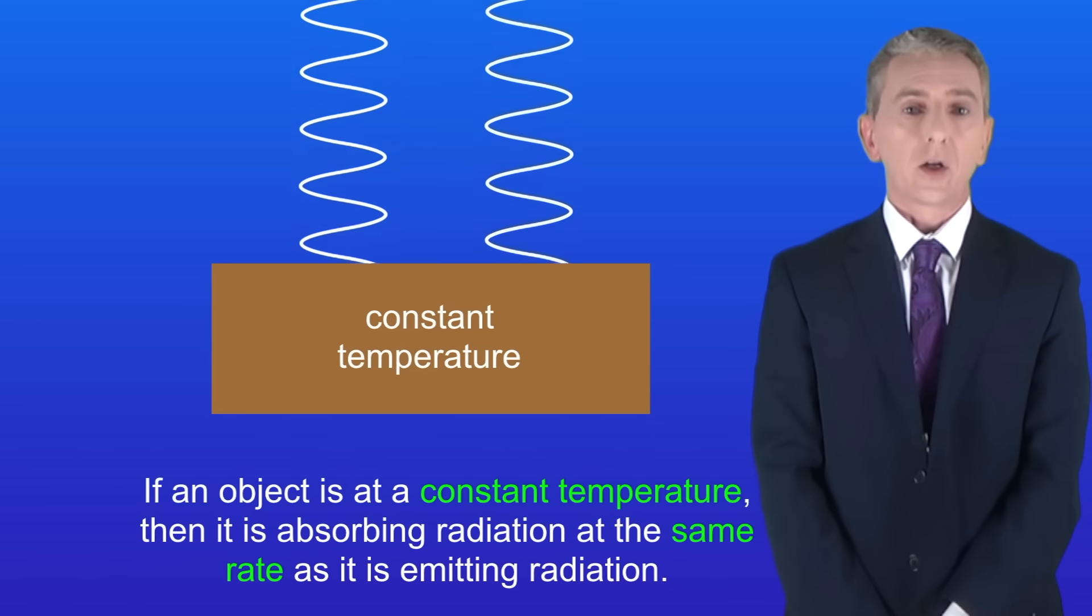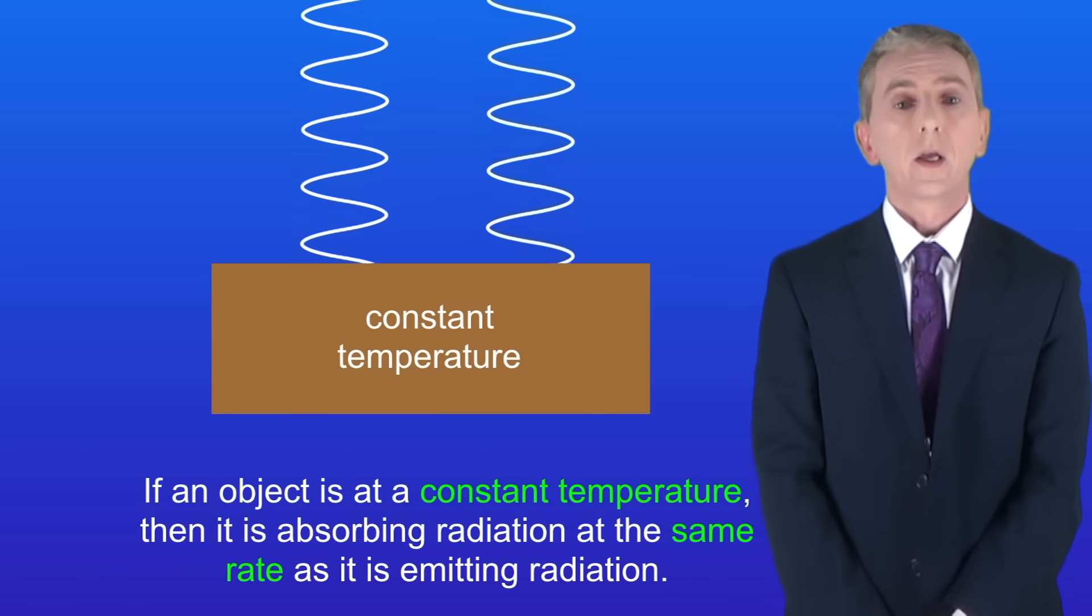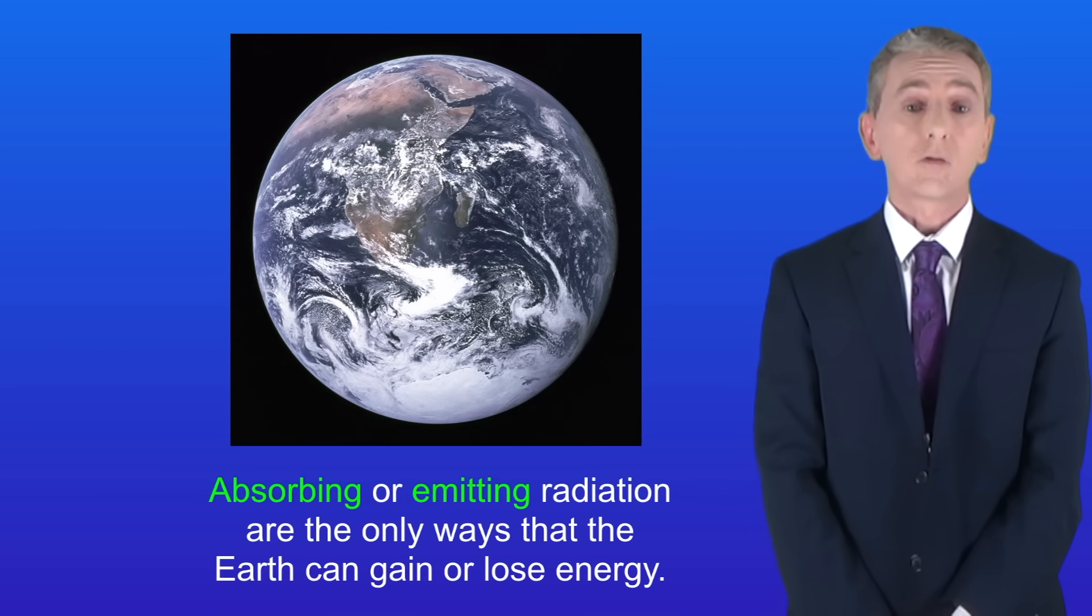Okay, we're going to finish now by looking at how radiation affects the temperature of the earth. Remember that absorbing or emitting radiation are the only ways that the earth can gain or lose energy.